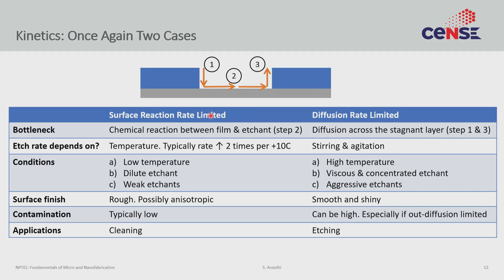Just like in CVD, the kinetics decides whether you are in one of two cases. It is possible that you are surface reaction rate limited, which is step number two, or it is possible that you are diffusion rate limited, which means the bottleneck is step number one or step number three. In surface reaction rate limited, the slowest step is the one where the reaction actually occurs on the surface. Since both the diffusion flux and the reaction flux must be equal in equilibrium, the rate of etching is decided by the rate at which the reaction can occur.